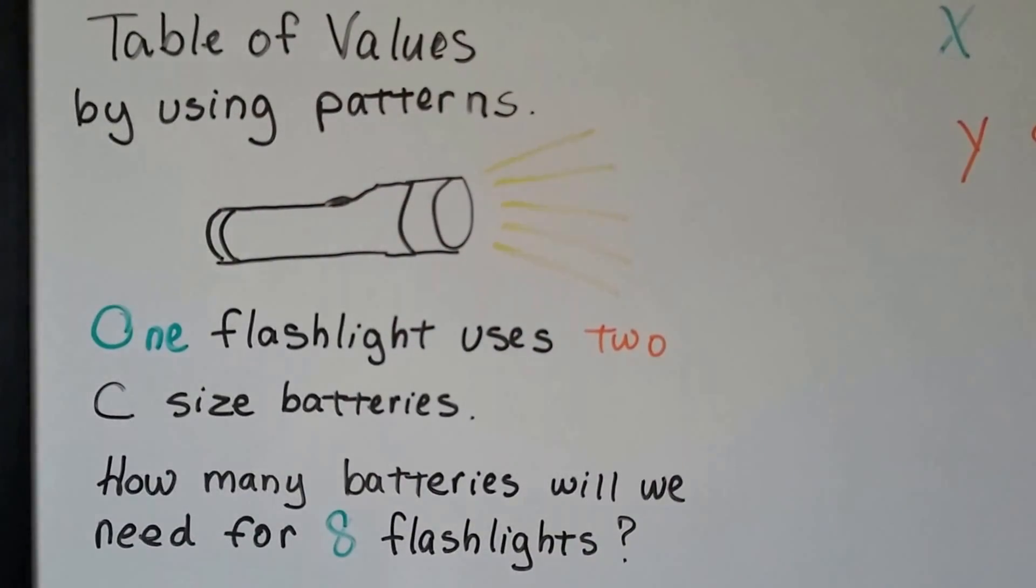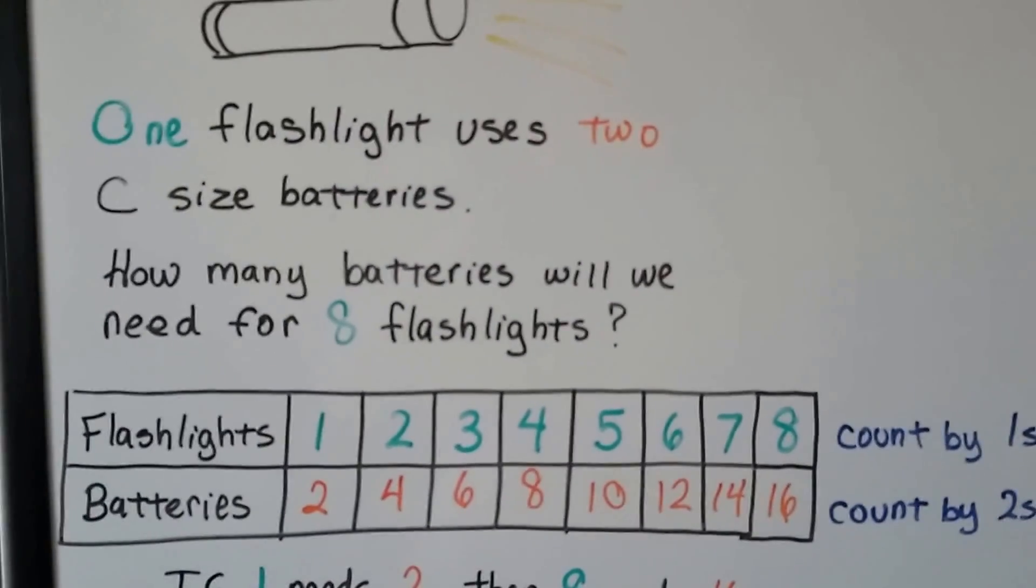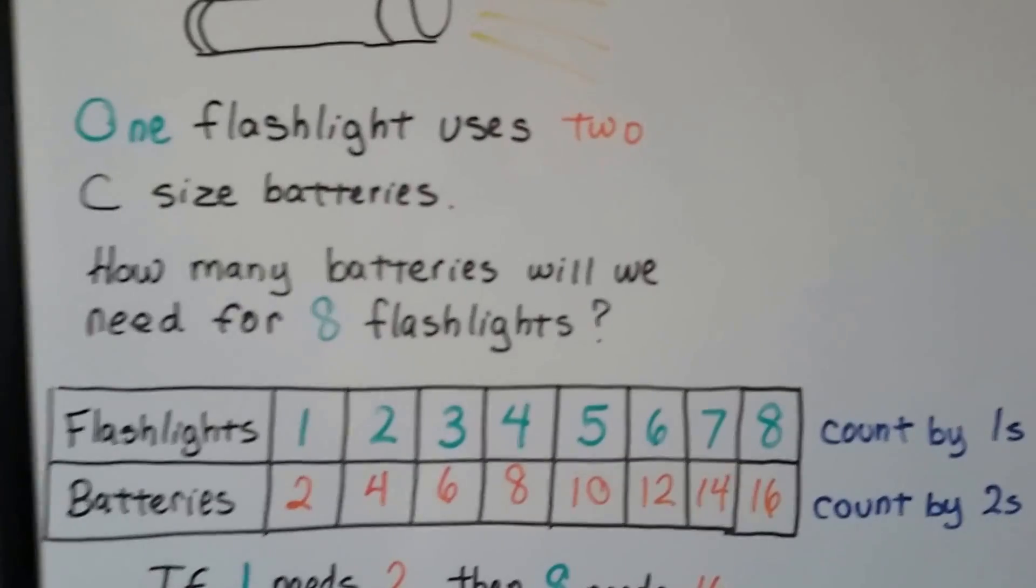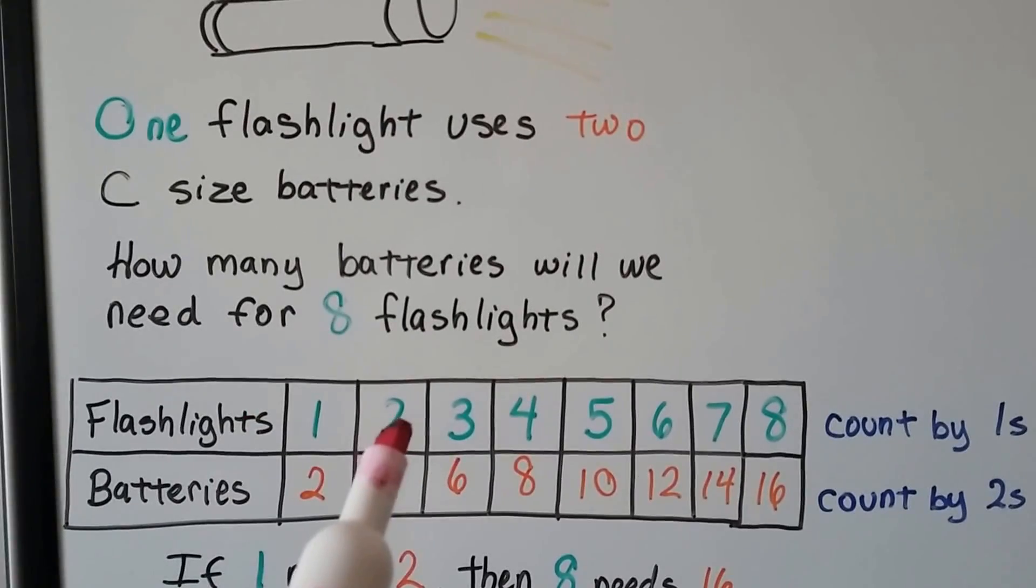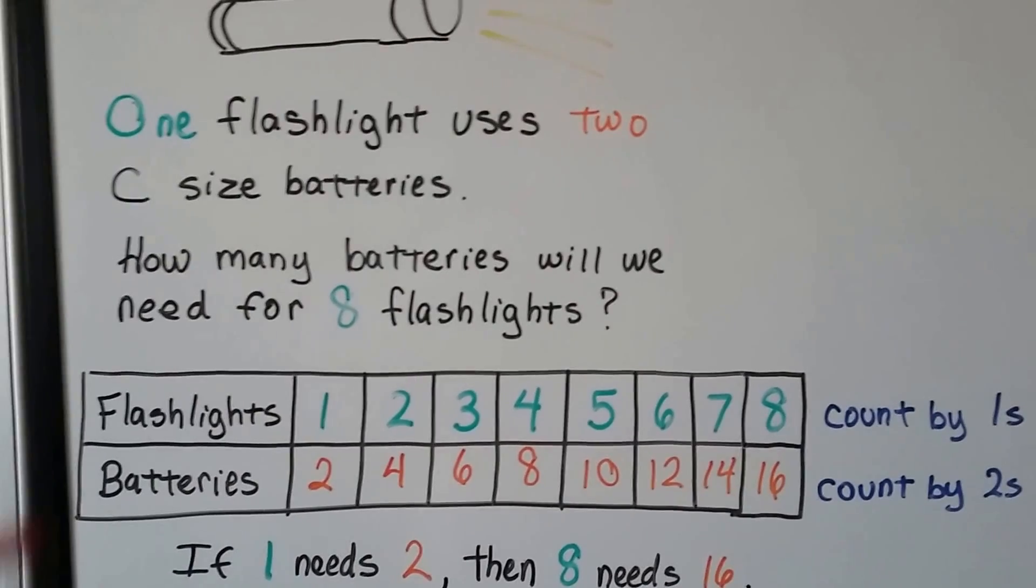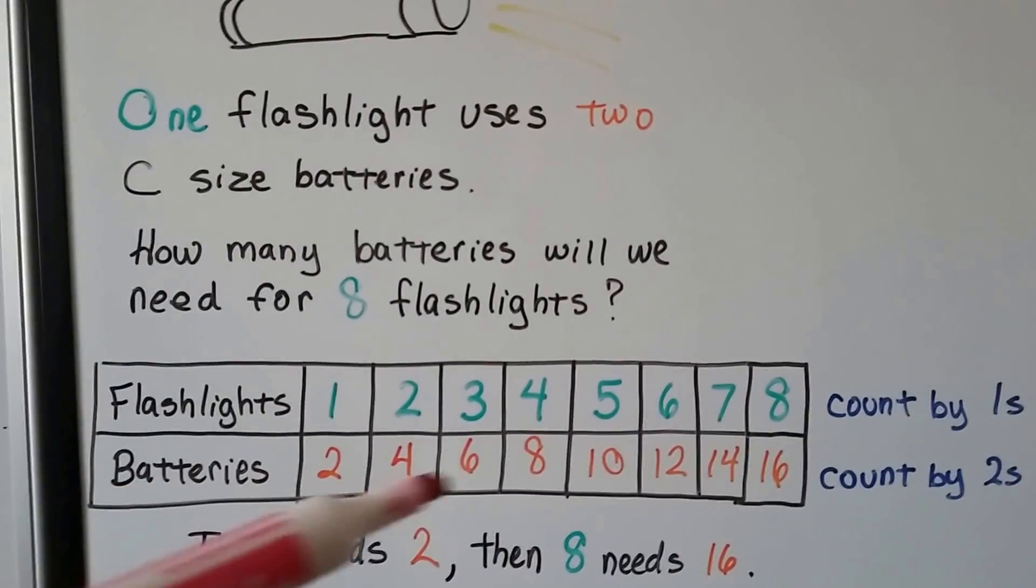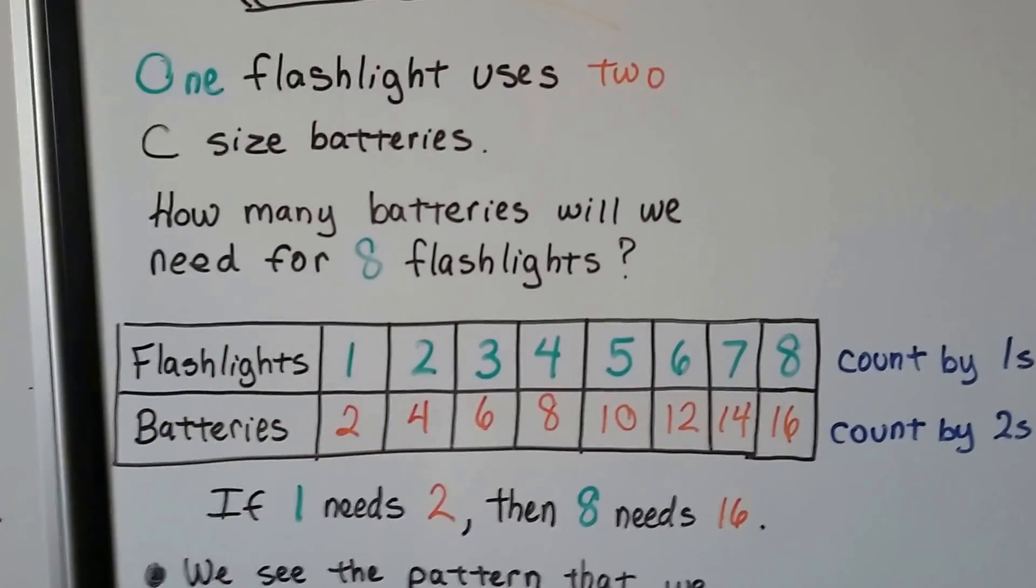So how many batteries will we need for eight flashlights? We can make a table of values. For one flashlight we need two batteries, two flashlights, we fill in our table. We can see that this one is counting by ones, and when we figure out the other values, the batteries are counting by twos.